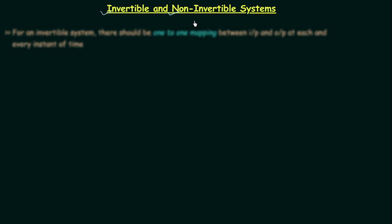In order to understand invertible and non-invertible systems, you must know what we mean by one-to-one mapping and many-to-one mapping. So before defining invertible and non-invertible systems, I will explain both. Let's understand one-to-one mapping first.